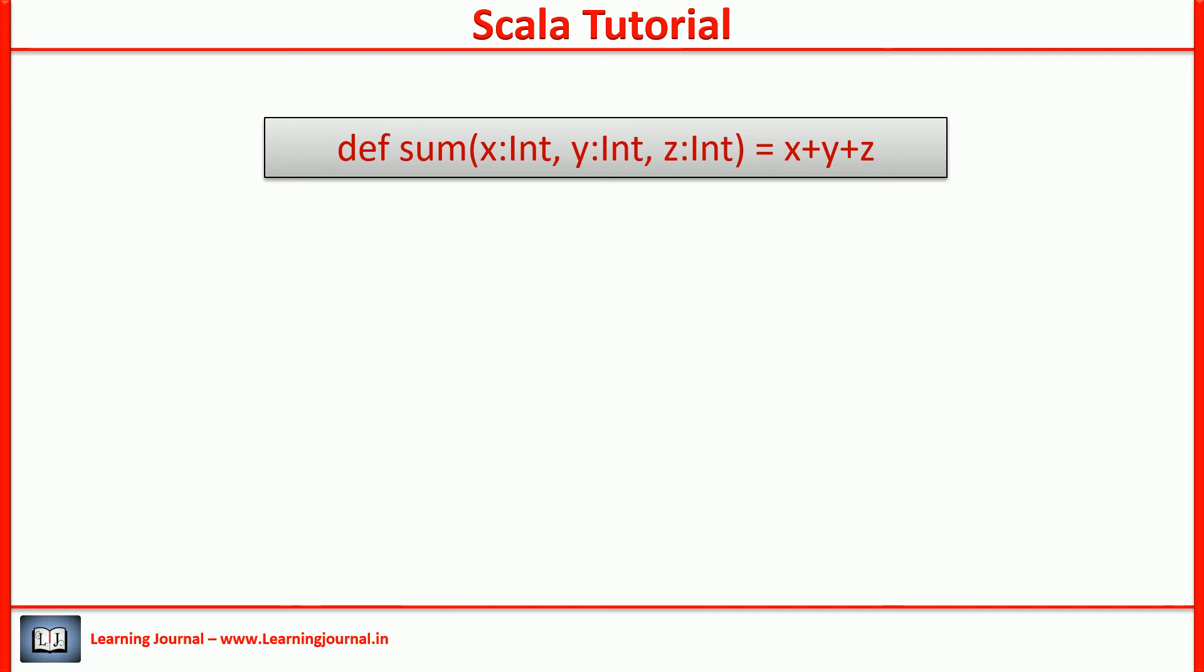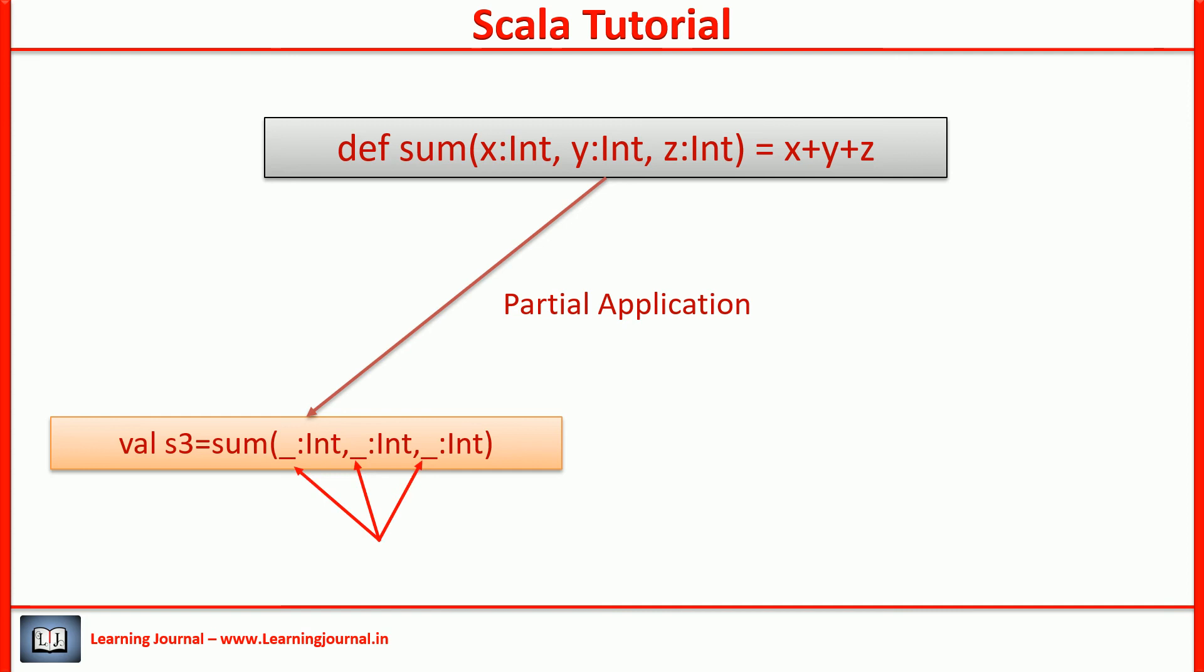You can skip all the arguments. Let me show you an example. In this example, I am skipping all the arguments. The sum and S3 are same, isn't it? But there is a small difference. The sum is a function definition and S3 is a function value. This example is a technique to convert a function definition to a function value.